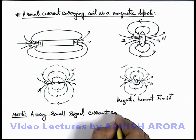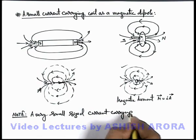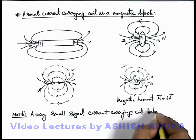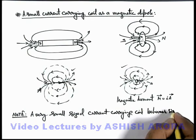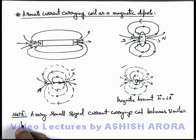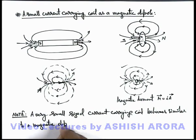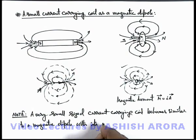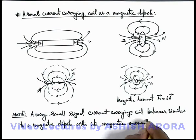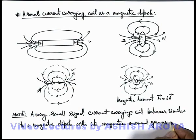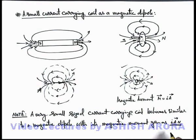A very small current-carrying coil behaves similar to a magnetic dipole, with its magnetic moment given as the product of current in the coil and the area vector. If there are some turns in the coil, we must multiply by the number of turns also, giving M = N·I·A.